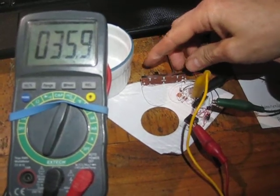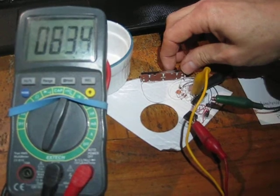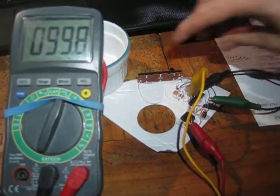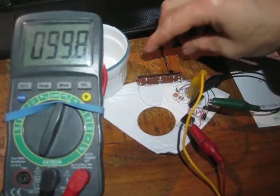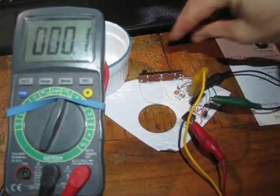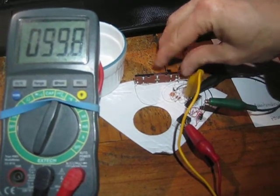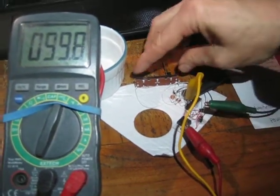35%, 59%... crank it all the way to 99.8%. So essentially, it goes all the way from 0.1% to 99.8%. It's pretty amazing actually that you can get that wide of a range with such a simple circuit.